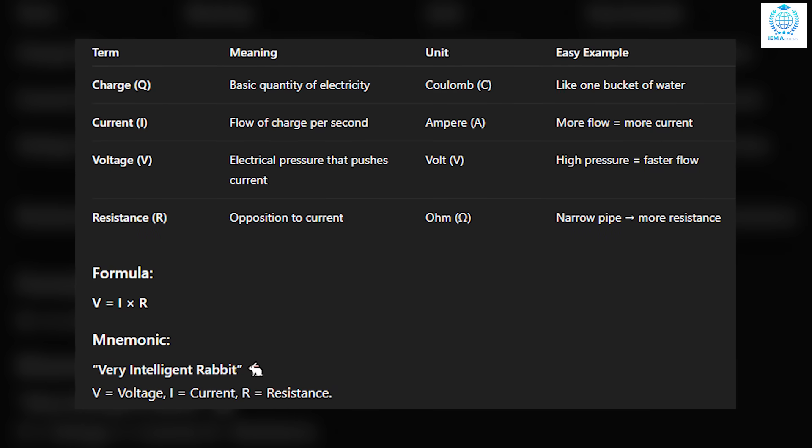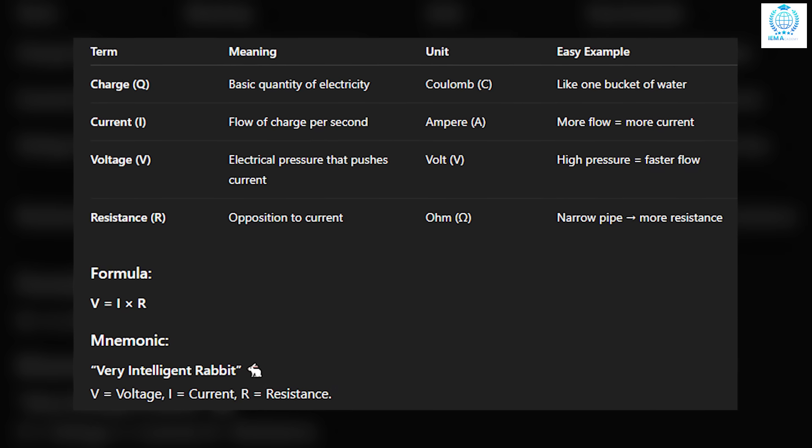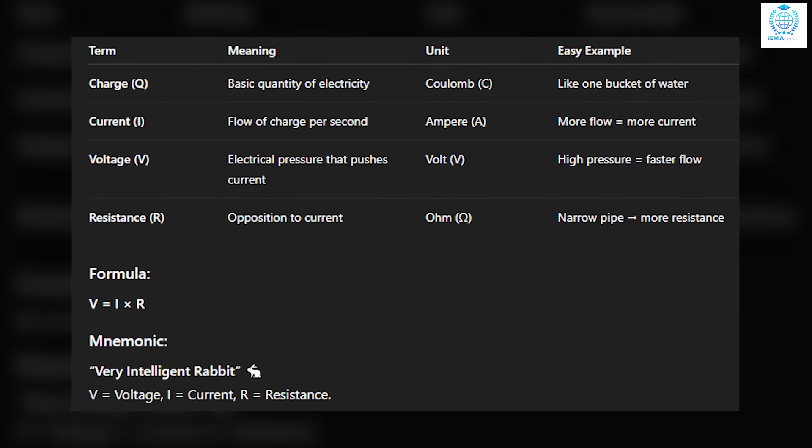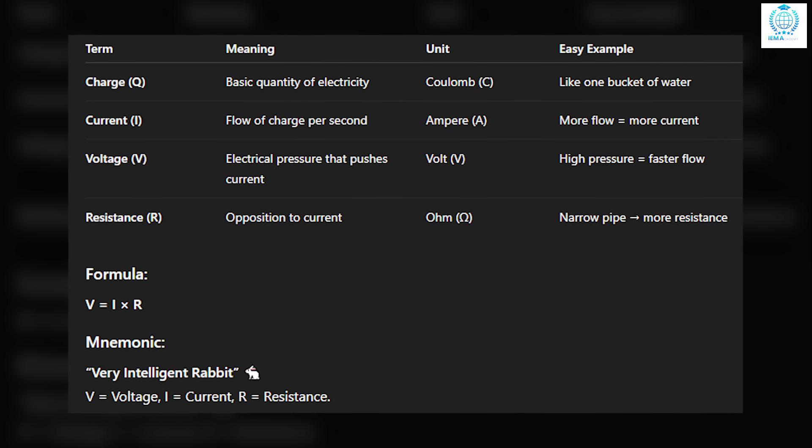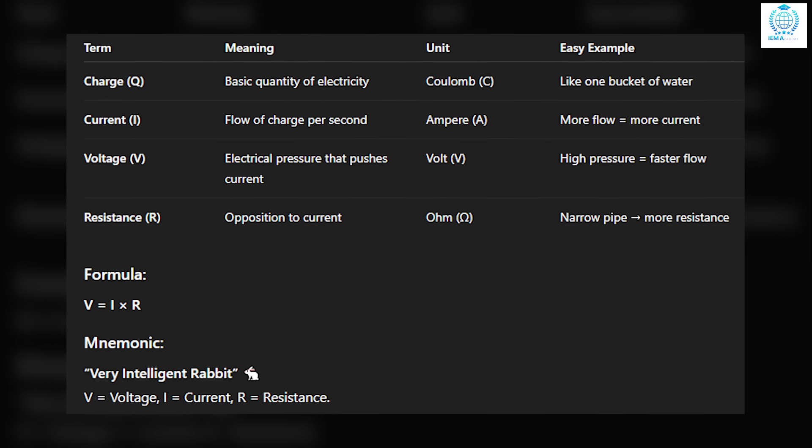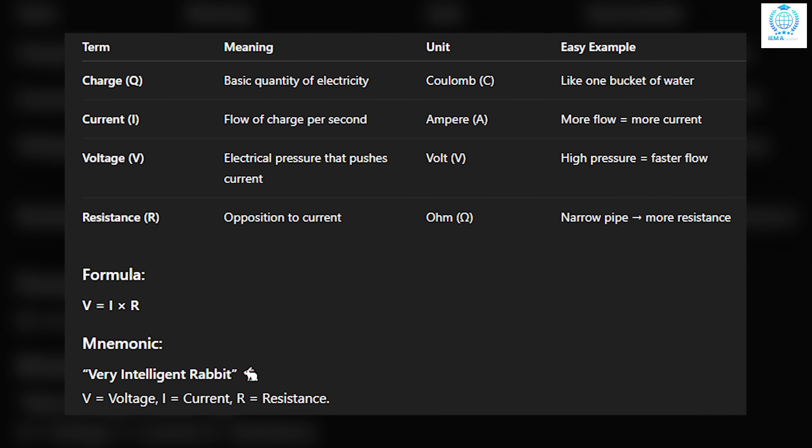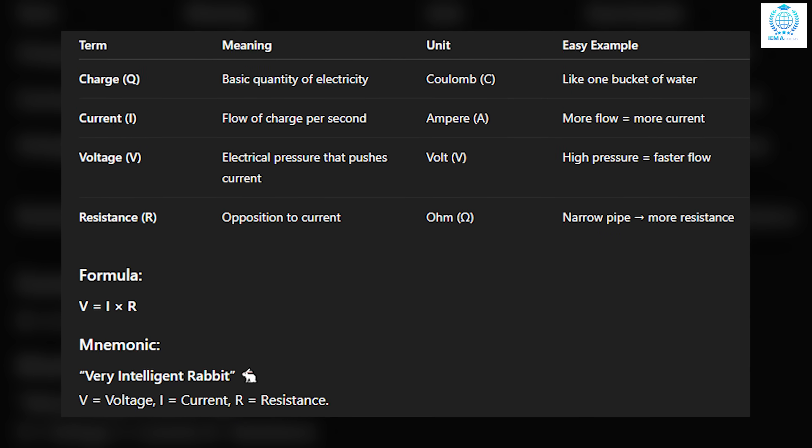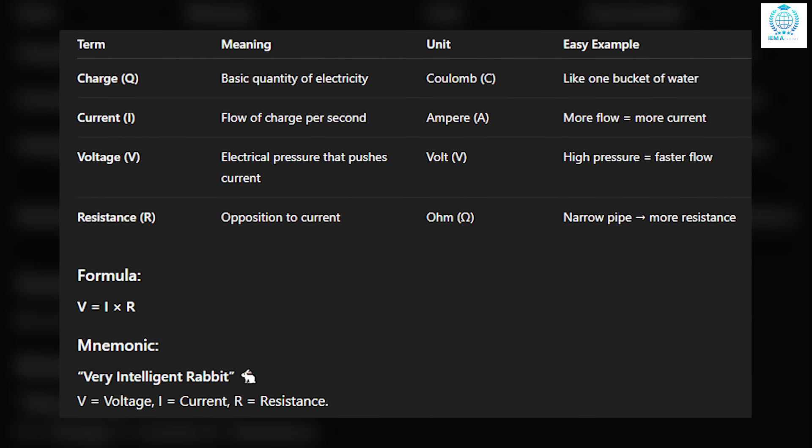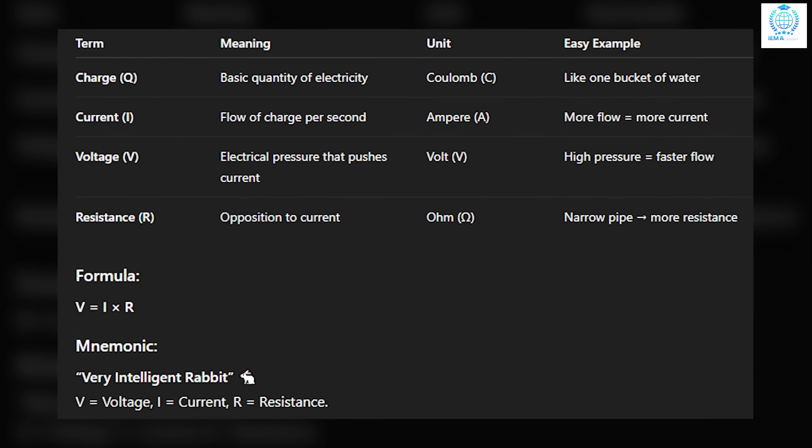Here are the important terms you must know in electricity. Charge, represented by Q, is the basic quantity of electricity. Its unit is the coulomb. Think of it like one bucket of water. Current, represented by I, is the flow of charge per second. Its unit is the ampere. More flow means more current.